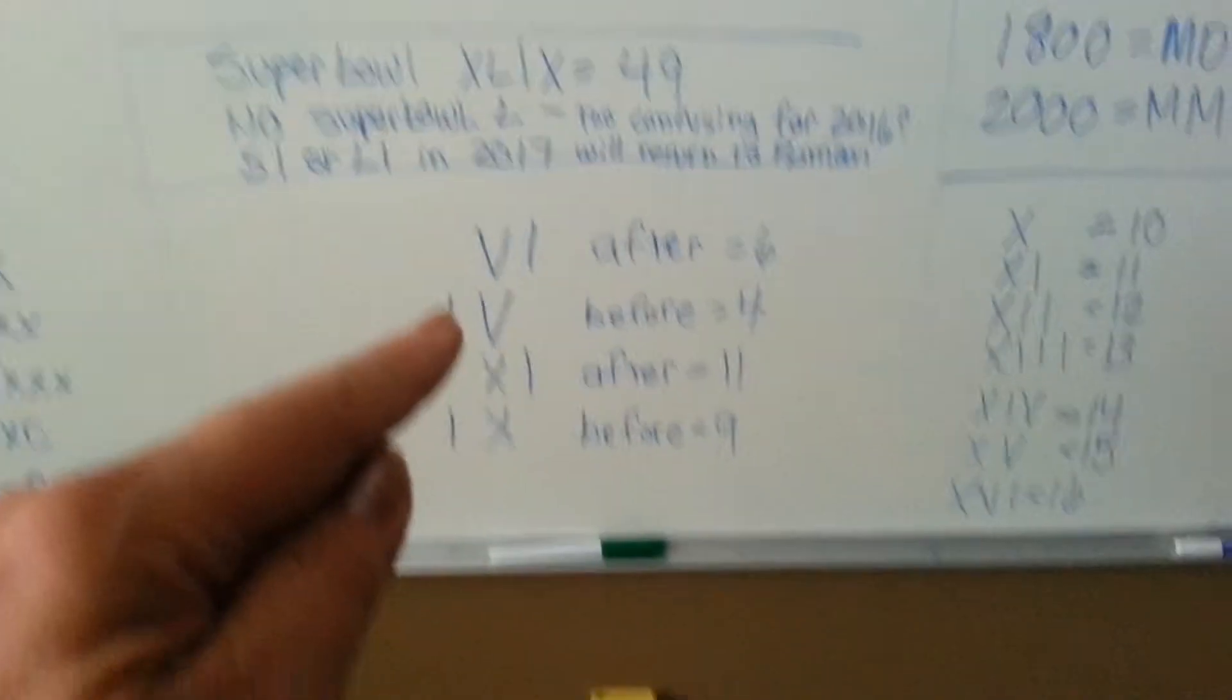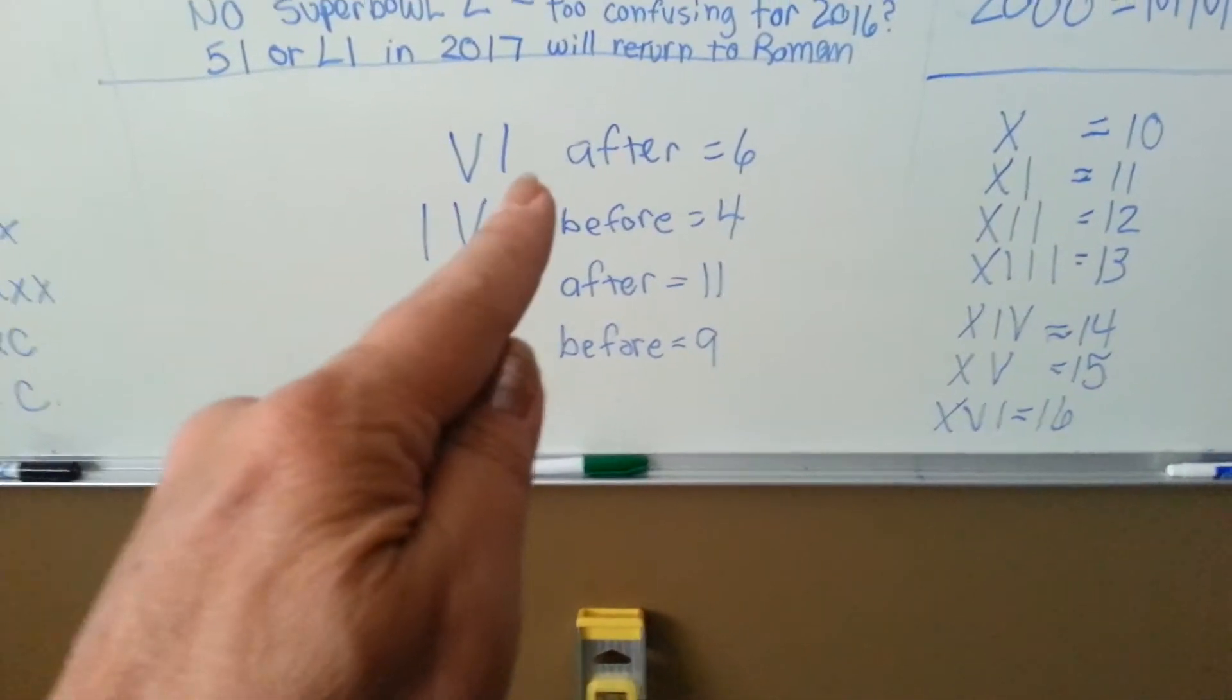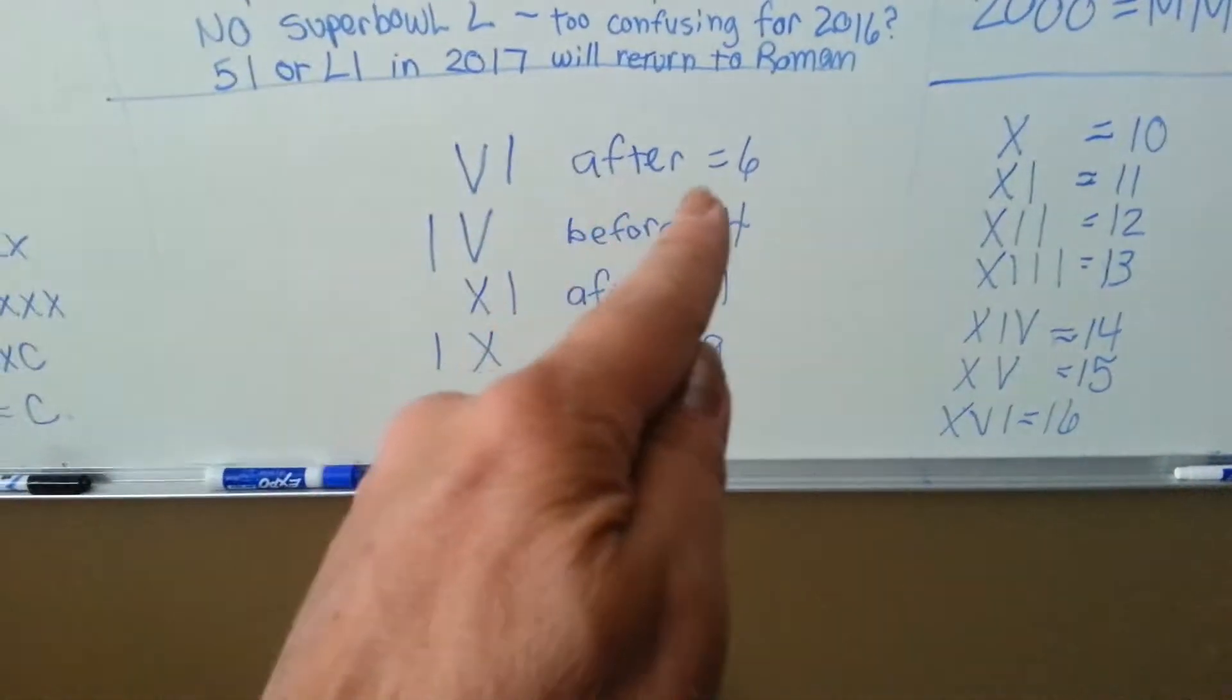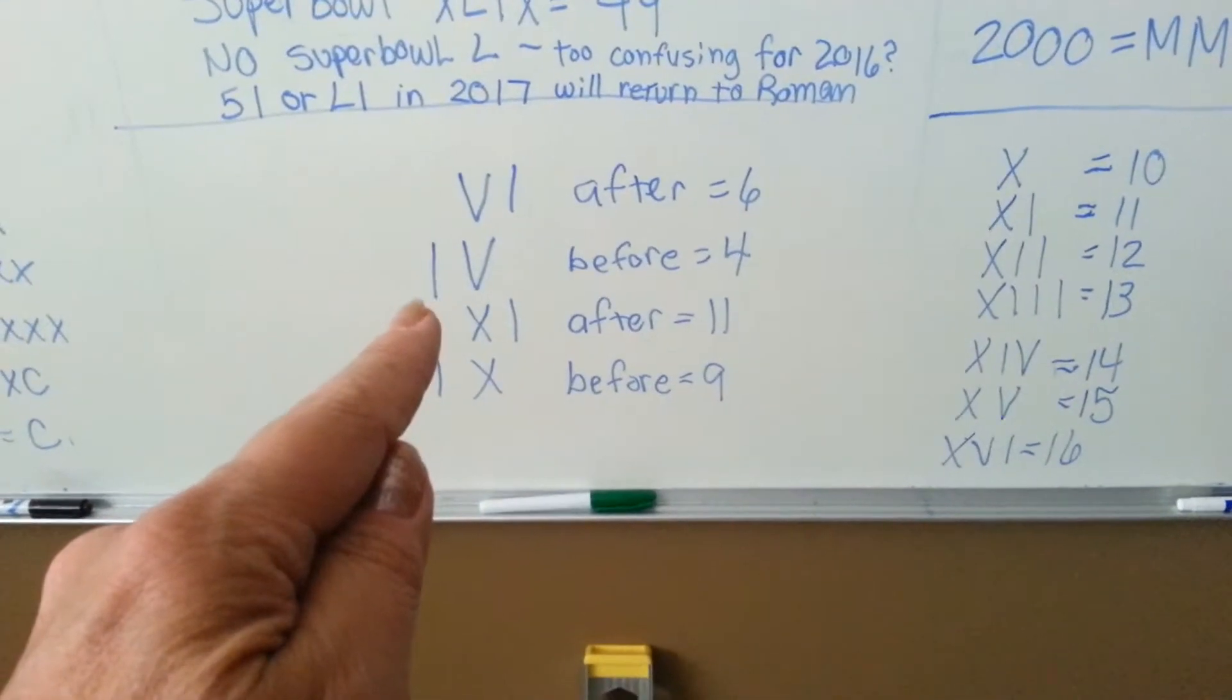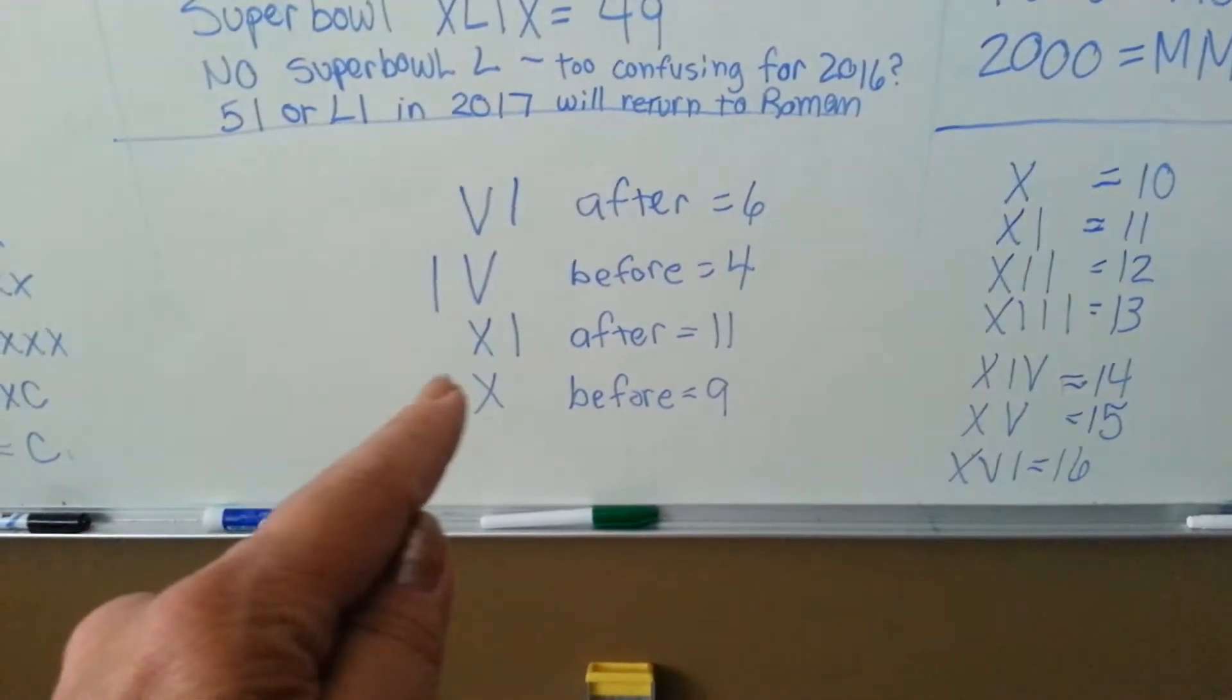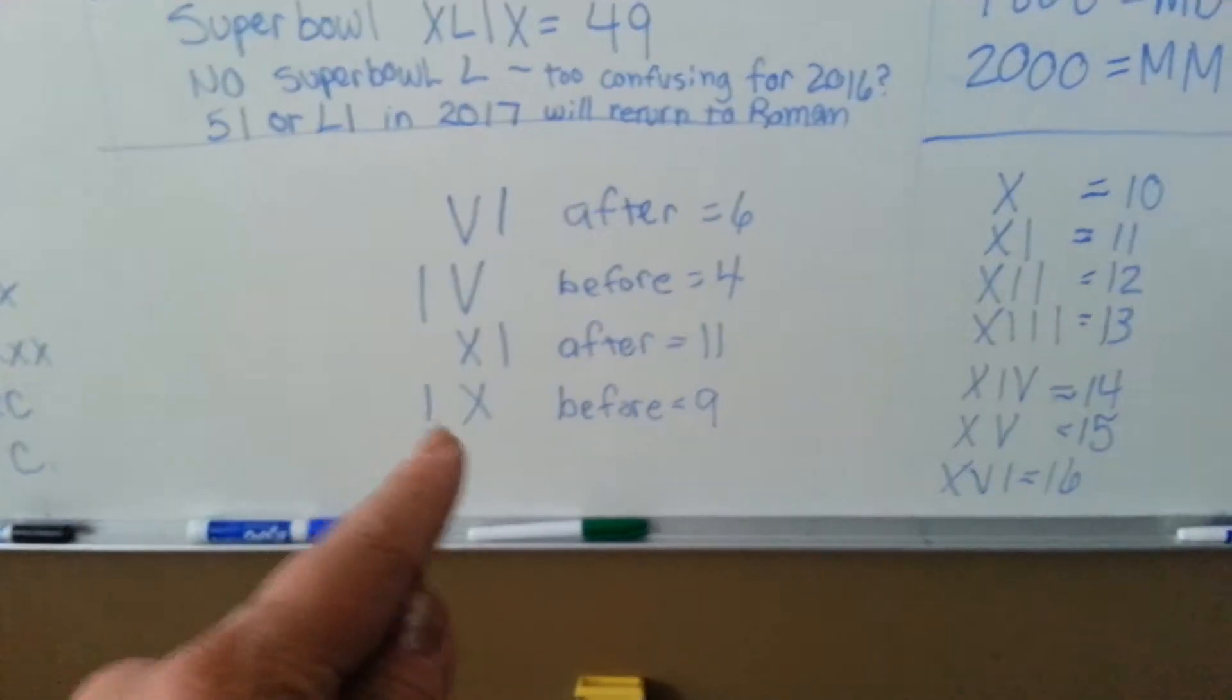So remember, if there is a letter after, it becomes larger, 6. And if there's one in front of it, it becomes smaller, a 4. XI would be 11, IX would be 9.